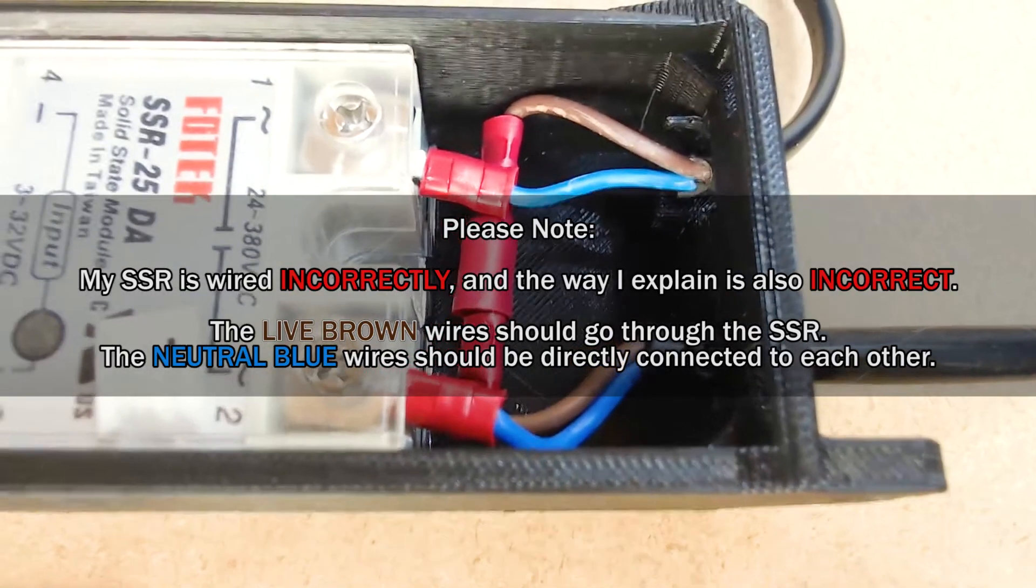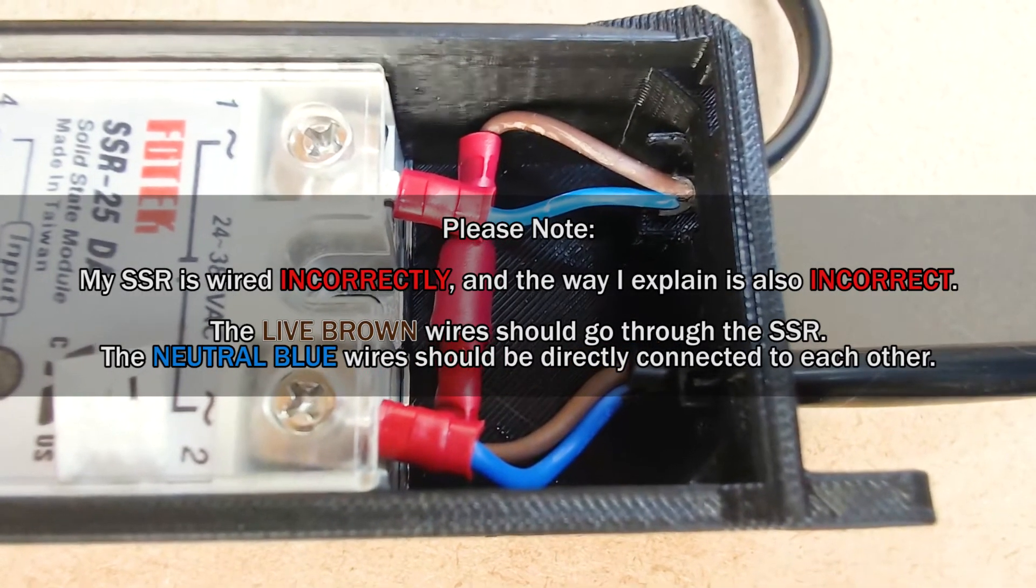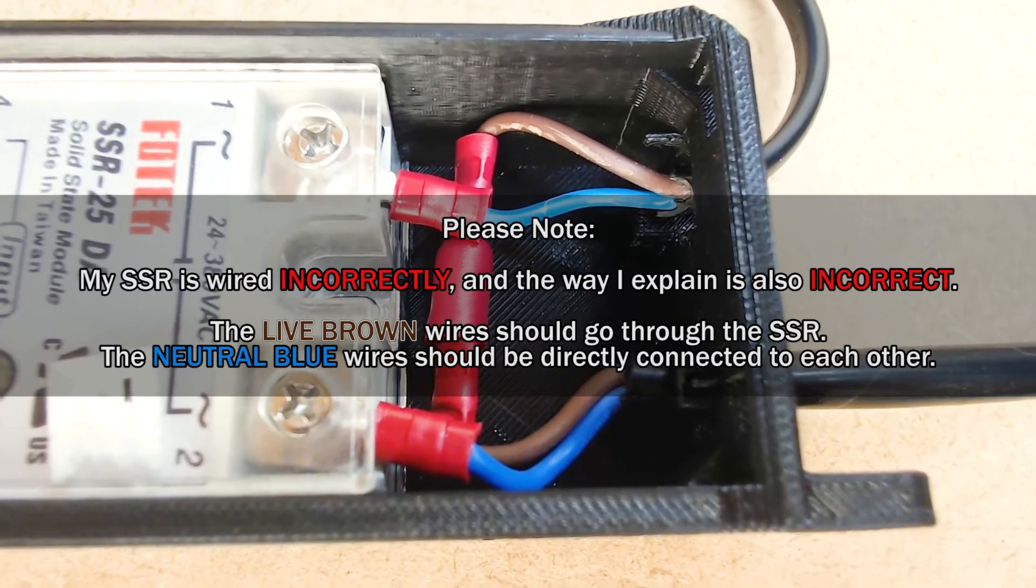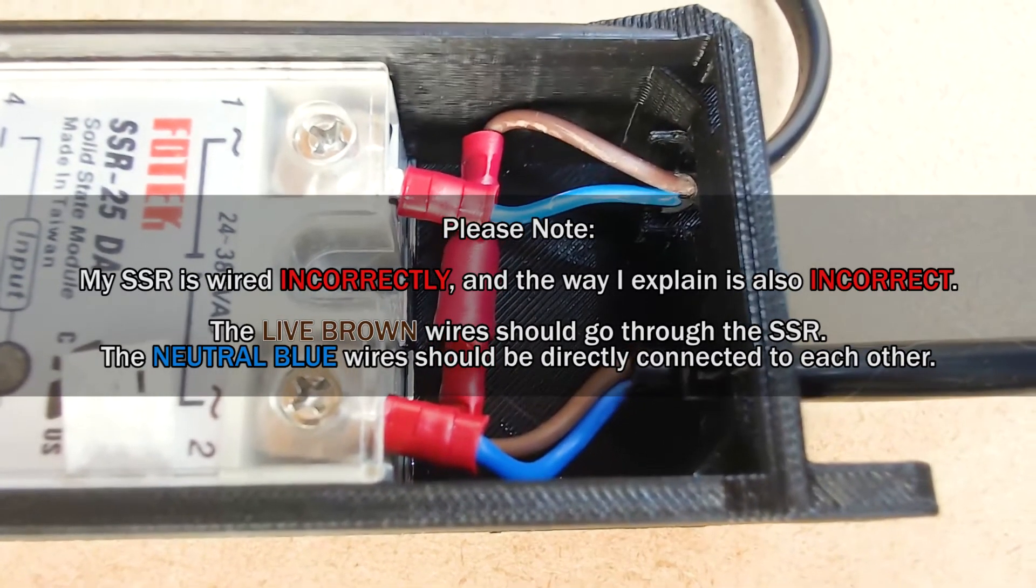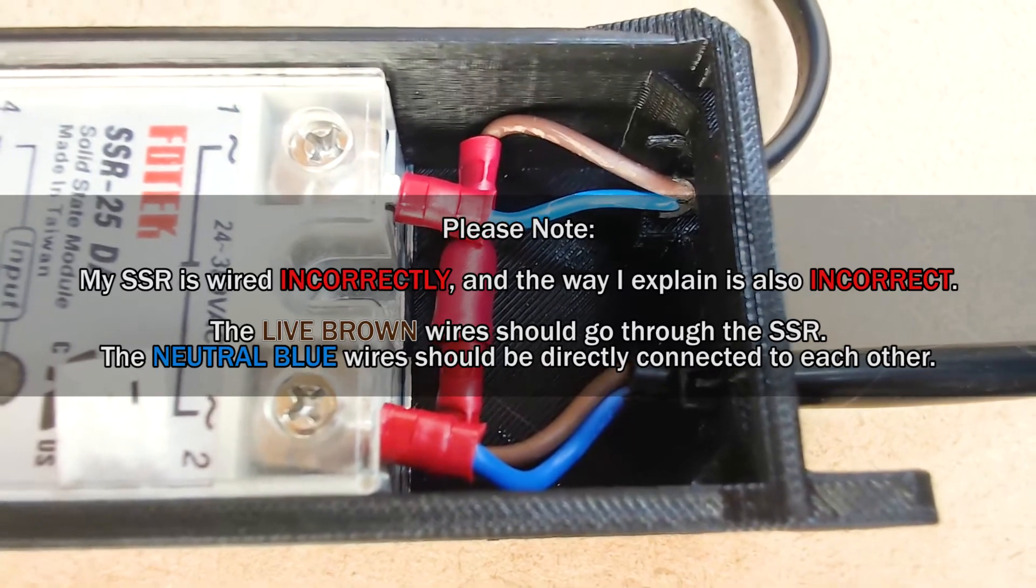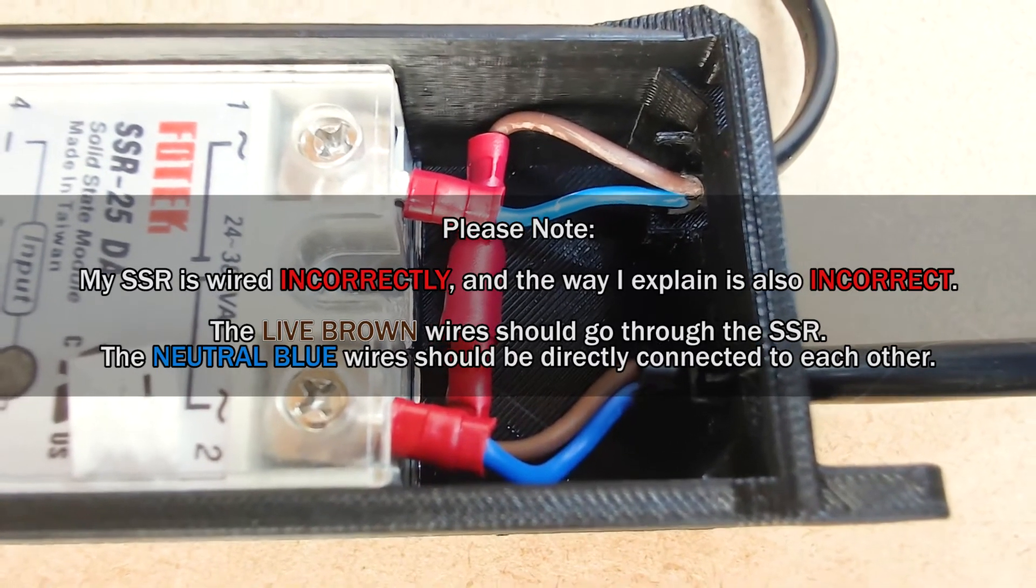So this is the SSR control box. Hopefully you can see there, there's two blues and two browns. The blues go across the terminals of the FOTEK SSR and the browns connect to each other.